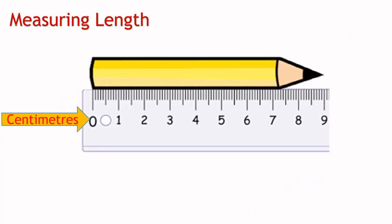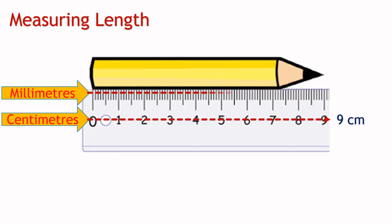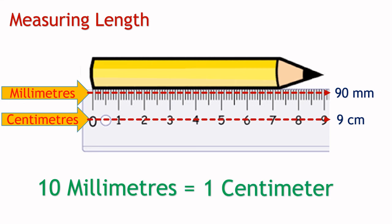In a ruler these points are called centimeters, and these points are millimeters. This pencil is 9 centimeters long which is same as 90 millimeters, because 10 millimeters make 1 centimeter.